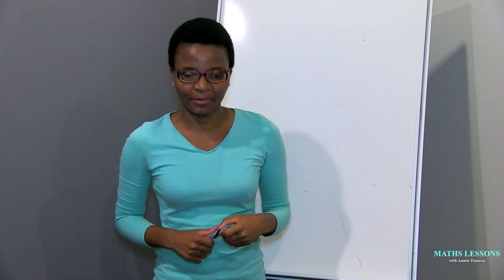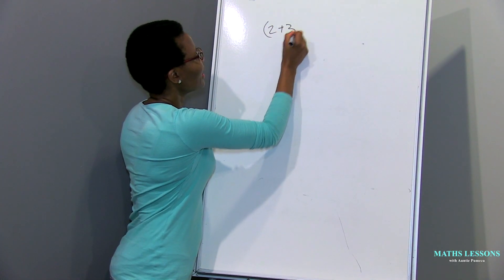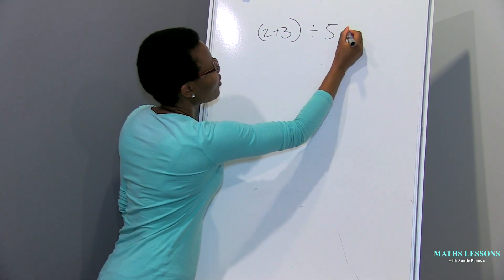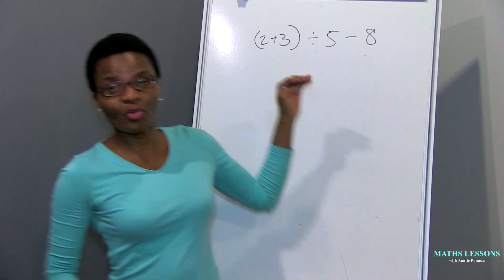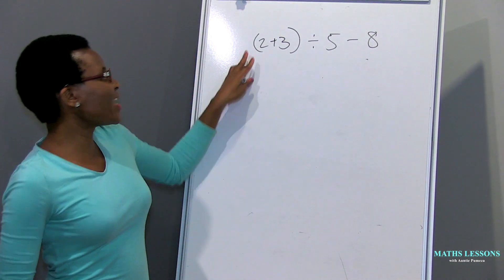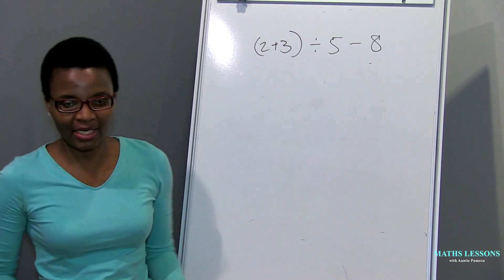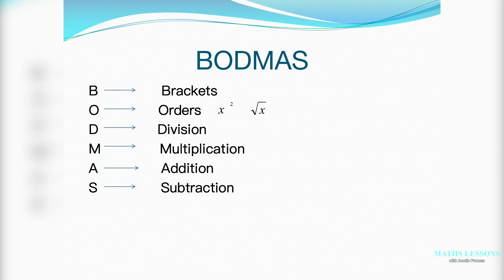Let me remind you what BODMAS is. B stands for brackets — whenever you see brackets, you start with them. For example, if you are given 2 plus 3 divided by 5 minus 8 with brackets around part of it, you start with the brackets first.